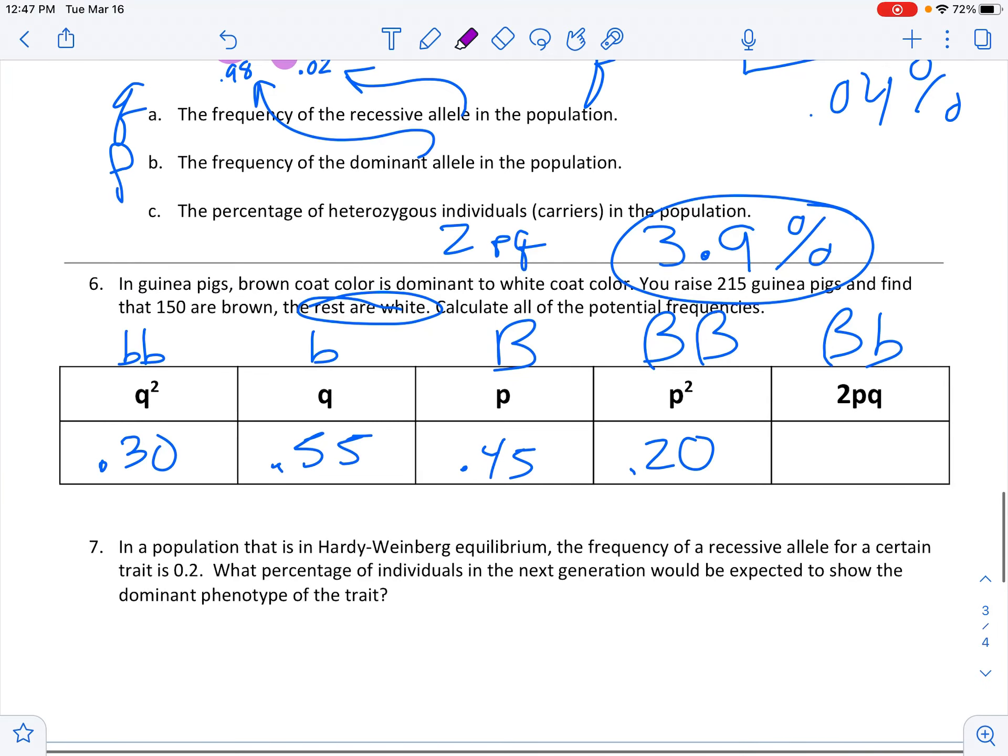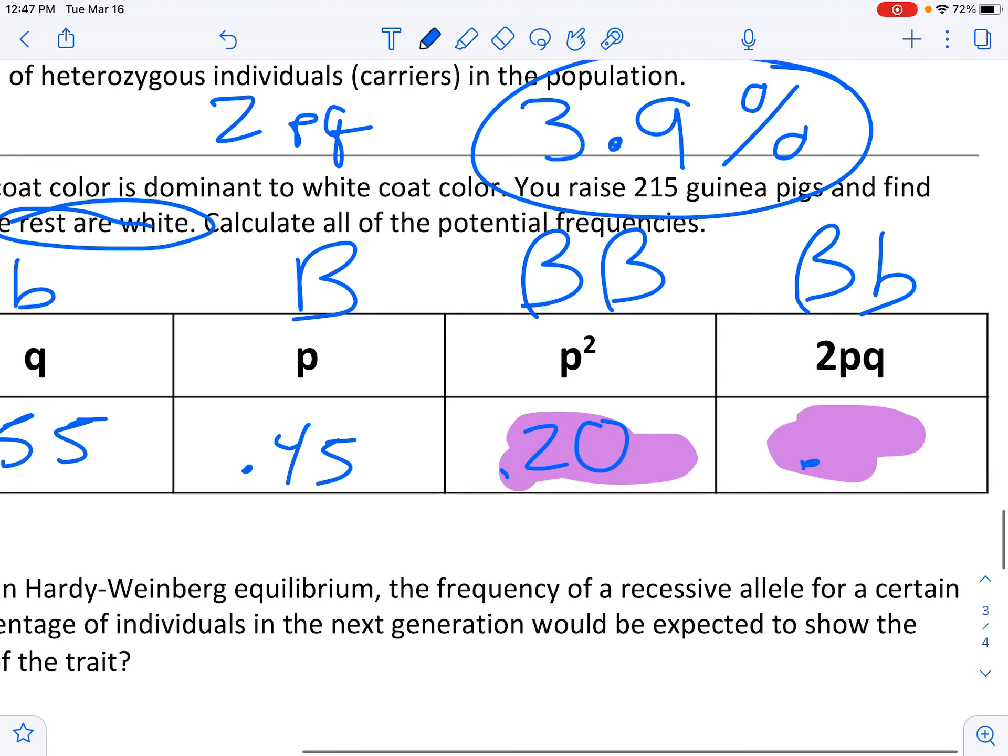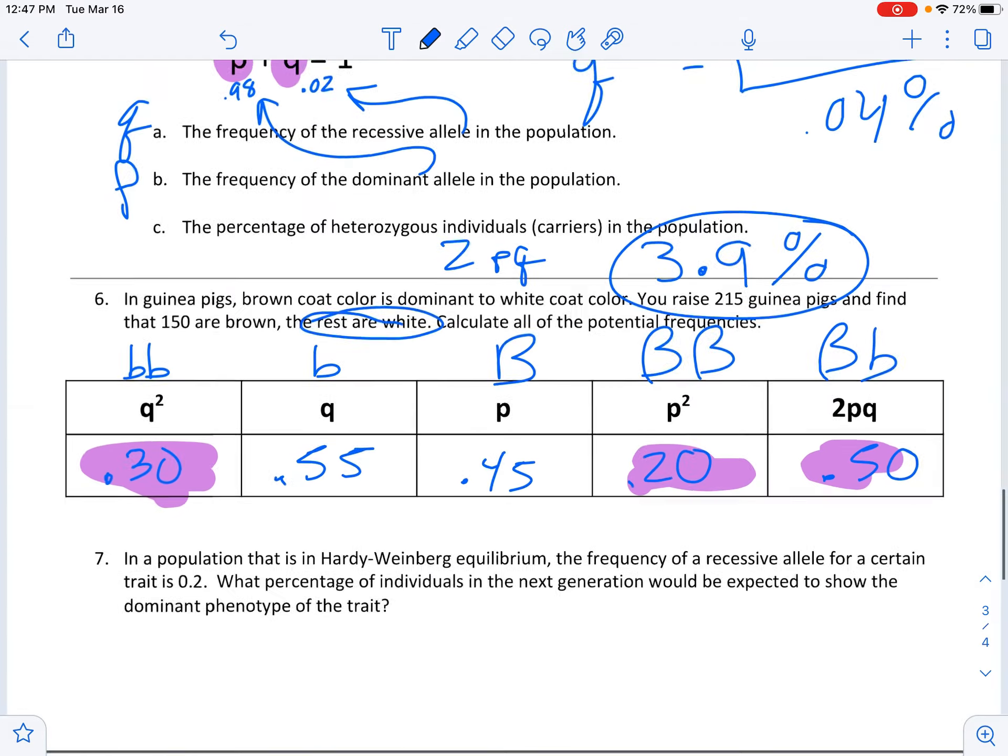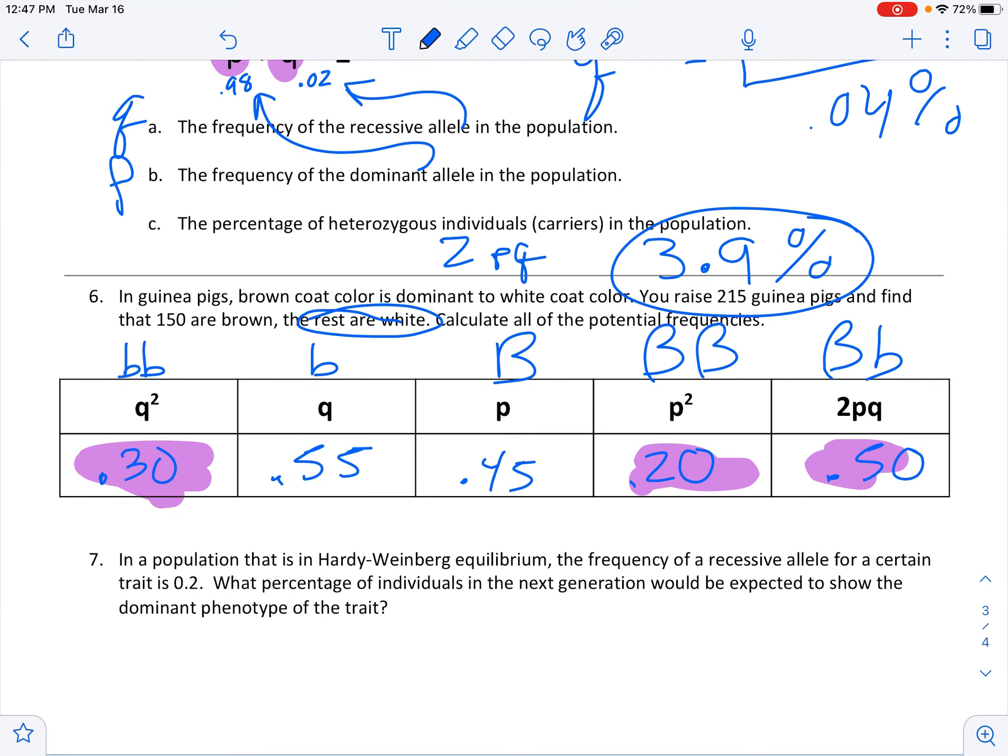And then again, remember that p squared plus 2pq plus q squared equals 1. So this must be 0.5. Then that would equal 1. Done.